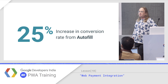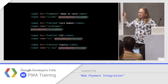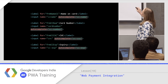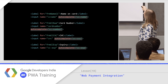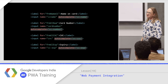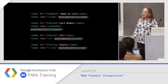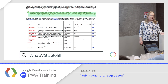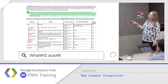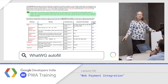Proper autofill can increase your conversion rate 25%. What does the markup look like? The autocomplete attribute — so values like cc-name or cc-number. There's a standard list of these, and if you just add these to your form, autocomplete becomes much faster and more exact. You don't have to rely on heuristics; you can guide it exactly where it needs to go. These are actually a web standard — not Chrome-specific. If you look up WhatWG autofill, there's the whole list, or you can look at Web Fundamentals because they publish the same thing online.